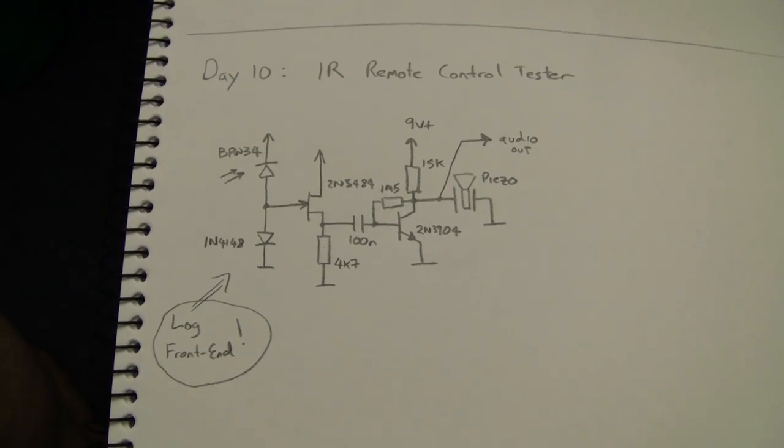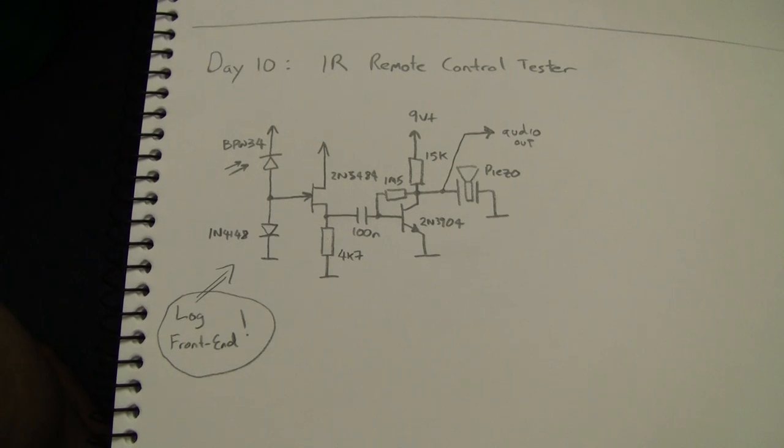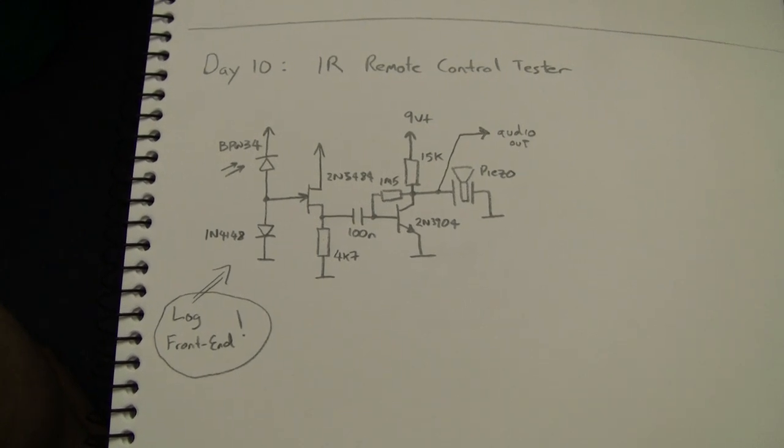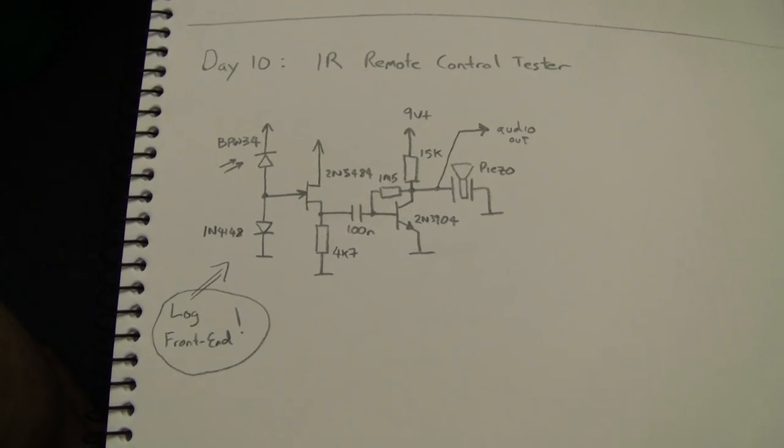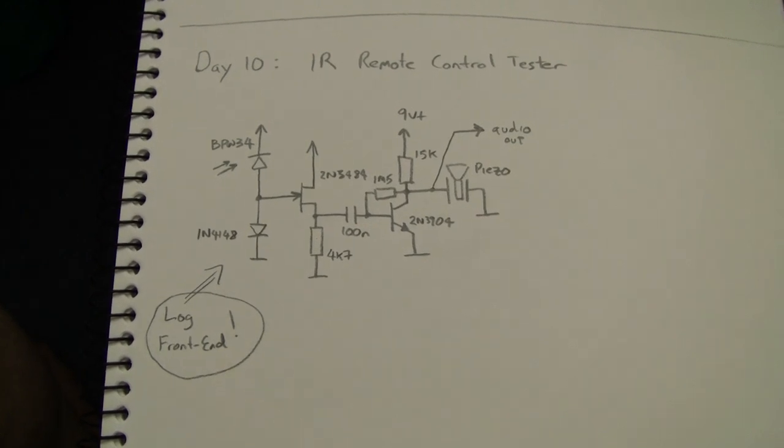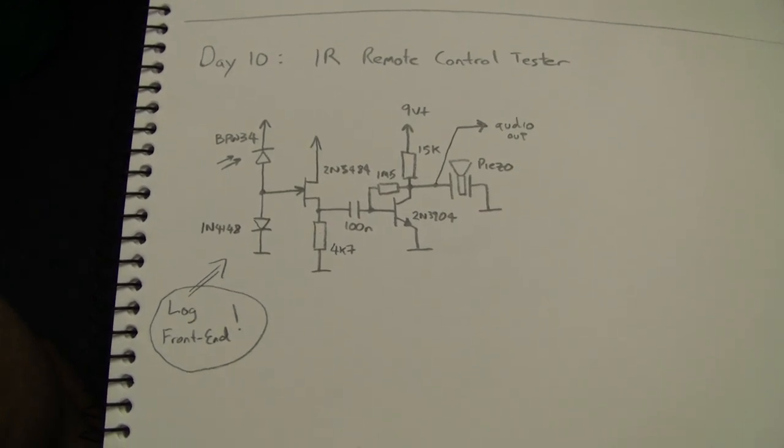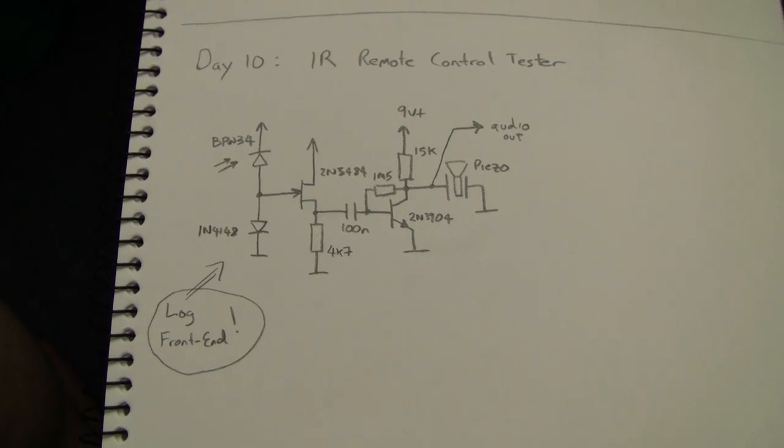I don't know about you, but if the remote control for the TV or whatever starts mucking up, I'm always wondering if it's the batteries or if someone's sat on it and broke it or kicked it around the room or whatever. Generally, I get out a multimeter and I measure the batteries. It's kind of annoying.